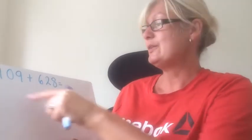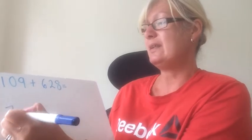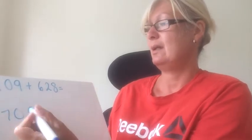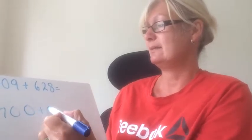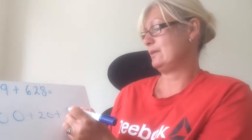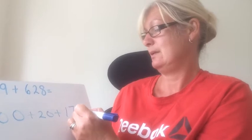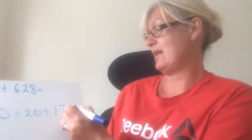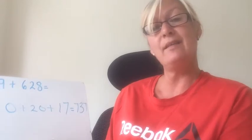The partitioning way, of course, you'd have added up your hundreds to give you the 700. Added up the tens. And then added up the ones. And then recombine to give you that 737.